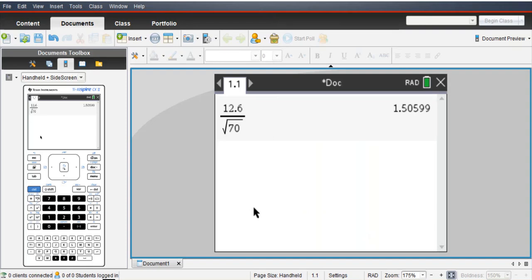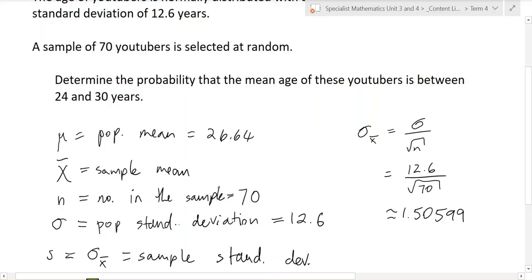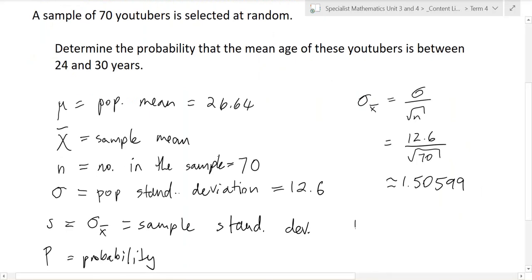Next we want to find out if this mean that we don't know is within the spread 24 to 30. So is it in there?